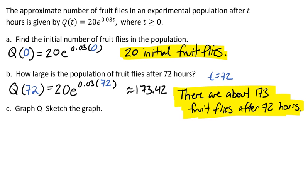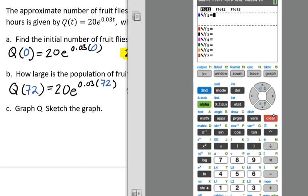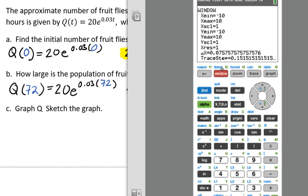Now it wants us to graph Q and sketch our graph. We'll pull up our calculator and go to our y equals, and clear out anything that's in there. We'll put in 20 times e raised to the 0.03x. We're going to change our window a little bit. Our time is going to be 0, and let's go up to maybe 120 hours, and we'll count by 12, so like half days.